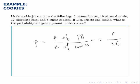And there are five peanut butter cookies, so the probability of drawing a peanut butter cookie is five out of thirty-five. The number of ways that can happen, divided by the total number of possibilities.